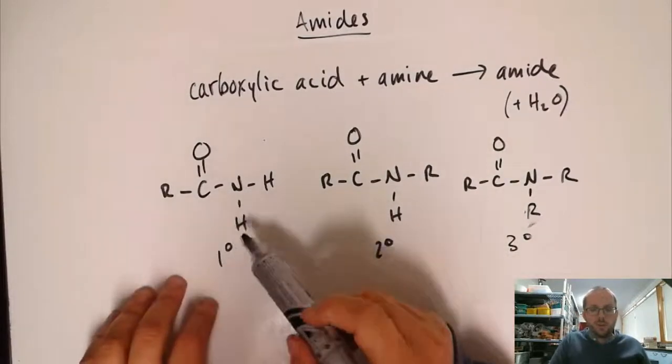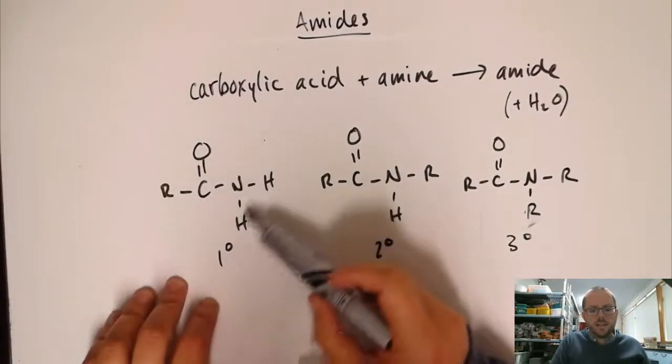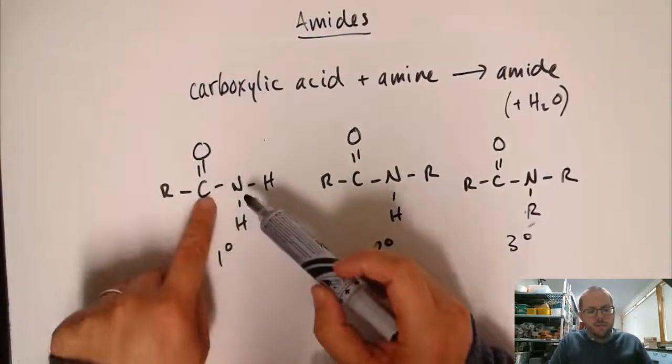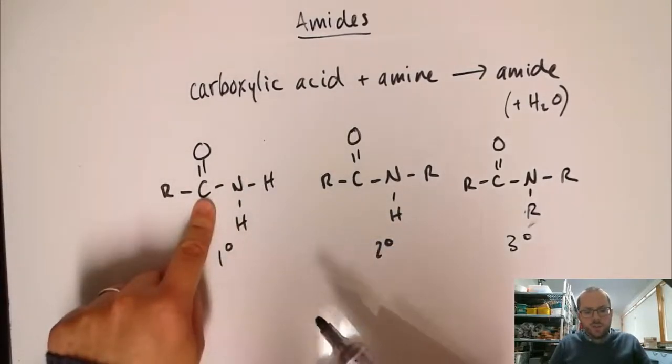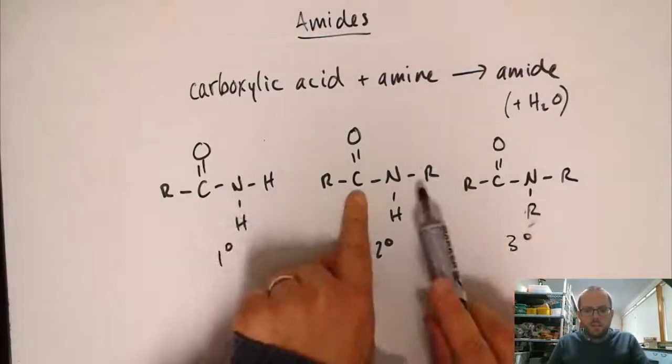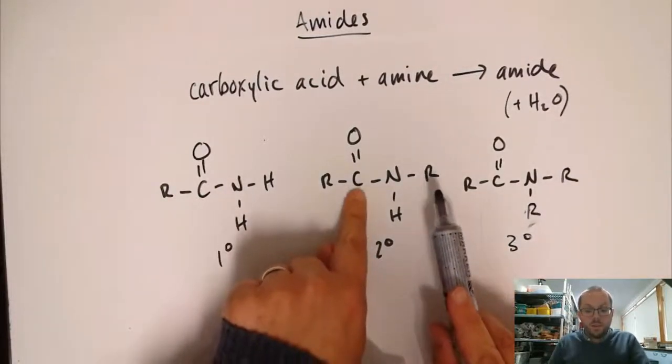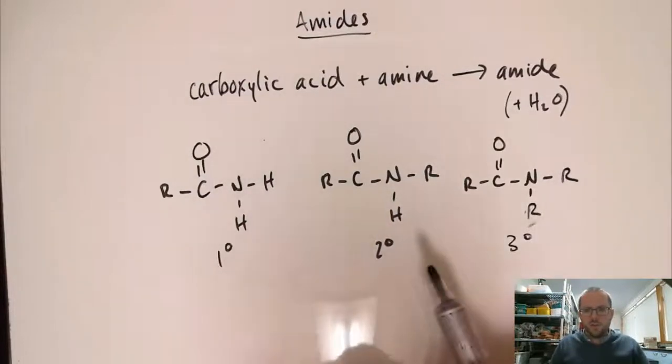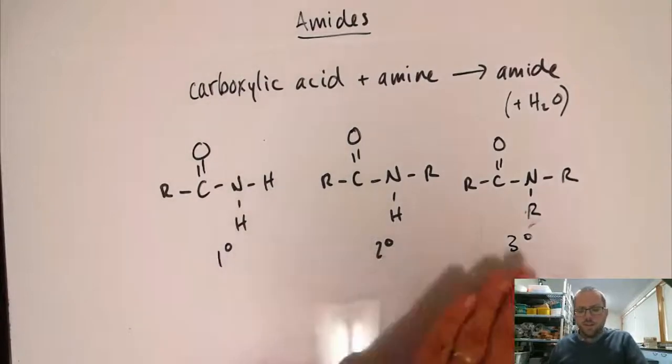Just like we usually do when we distinguish between these, it depends on the carbon groups that we have attached, but we're looking at what we have on the nitrogen. Do we only have this one carbon attached to the nitrogen? Do we have two carbons attached to the nitrogen, one of which is the carbonyl group? Or do we have three carbons attached to the nitrogen, including the carbonyl group? Primary, secondary, and tertiary.